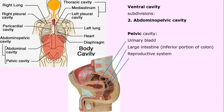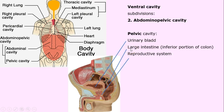Still in the ventral cavity — remember the dorsal is the brain and spinal cord. Now we get to the pelvic region, which is the lower part. As you might guess, this is where the reproductive organs are. In a male, there's a prostate. We also have the urinary bladder, the large intestine — also called the colon — and the reproductive organs.